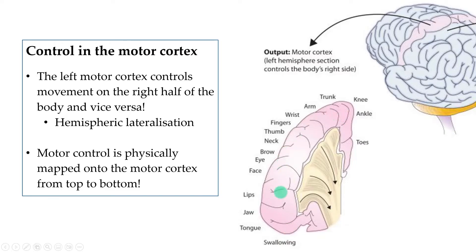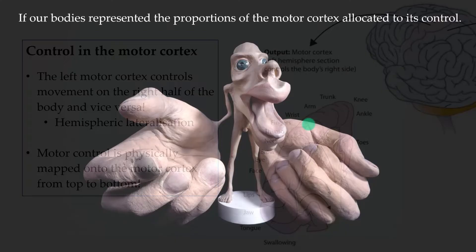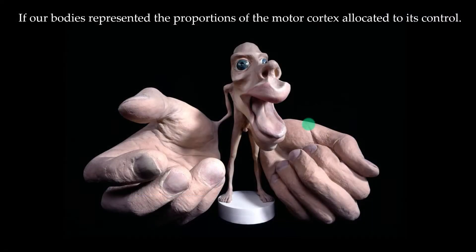So it physically maps out, but from the top to bottom. And notice how much space is assigned to the hands and the face. It's very disproportionate to our actual bodies. In fact, if our bodies actually represented the proportions of the motor cortex that was allocated to its control, we would look something like this. Best not to think about it for too long.